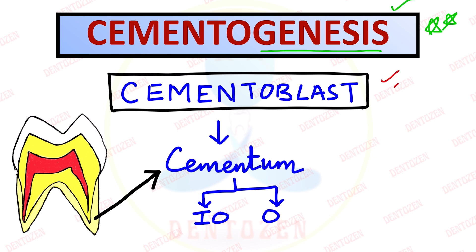This video is divided into two parts. In the first part, we'll see about the cementoblast — where it comes from and what are the two different types. In the second part, we'll see the process of cementum formation: what are the steps and how different types of cementum are formed in different parts of the root.